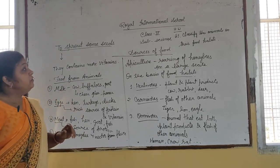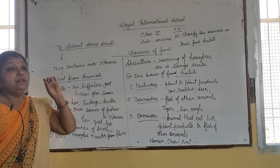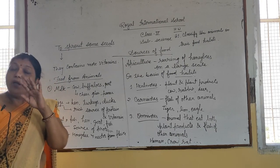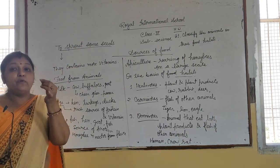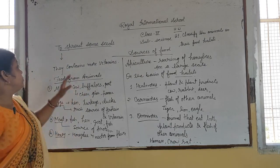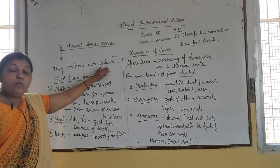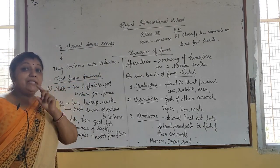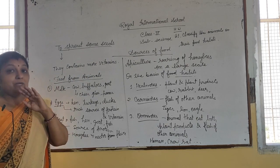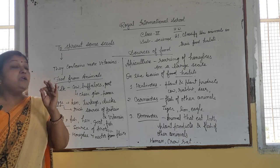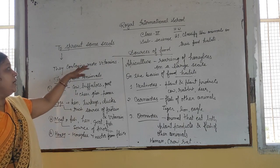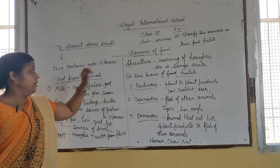We will leave the cloth tied for one day. After one day, when we open the cloth, we will find that there are small white outgrowths coming out from the mung seeds — those are the sprouts. Sprouted seeds contain more vitamins and are delicious. We can eat these sprouts by boiling or raw, and they are more nutritious.